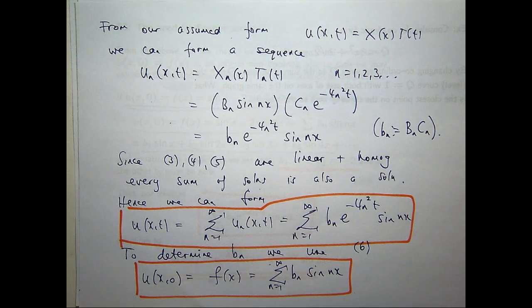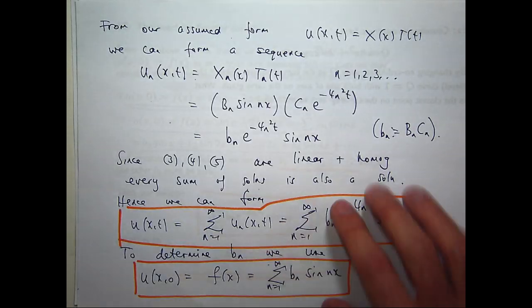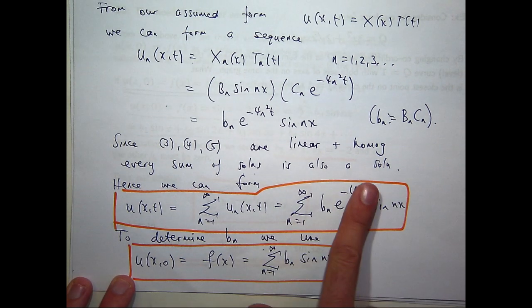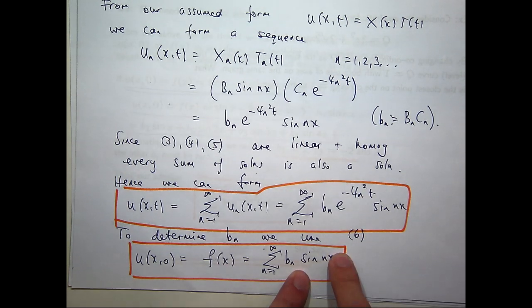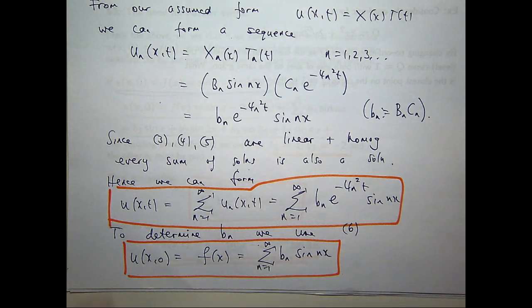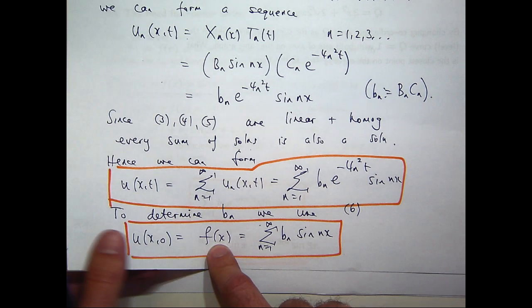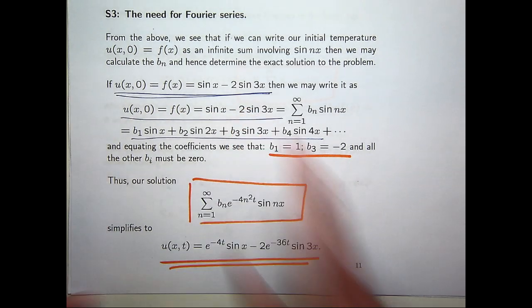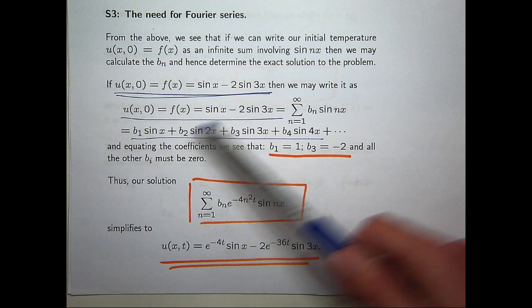The last thing we haven't used yet is the initial temperature function. We've used the PDE, the boundary conditions, but not the initial temperature. Let's bring that in now. If we let t equal 0, the exponential becomes 1, and we can write down f of x as our series. The question is: how do you calculate the B sub n's from this relationship? It depends on the form of your initial temperature. If the initial temperature is a finite sum involving sin x, sin 2x, sin 3x, et cetera, you can just equate coefficients and come up with a solution — Fourier series is not required.